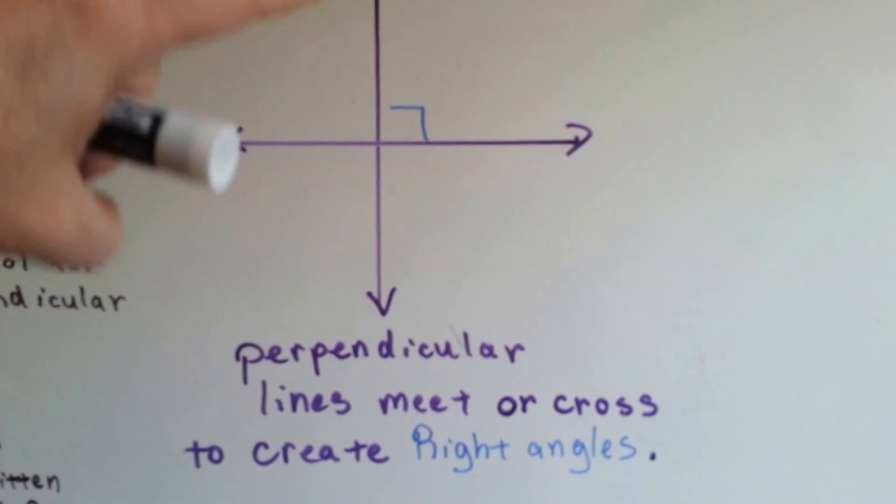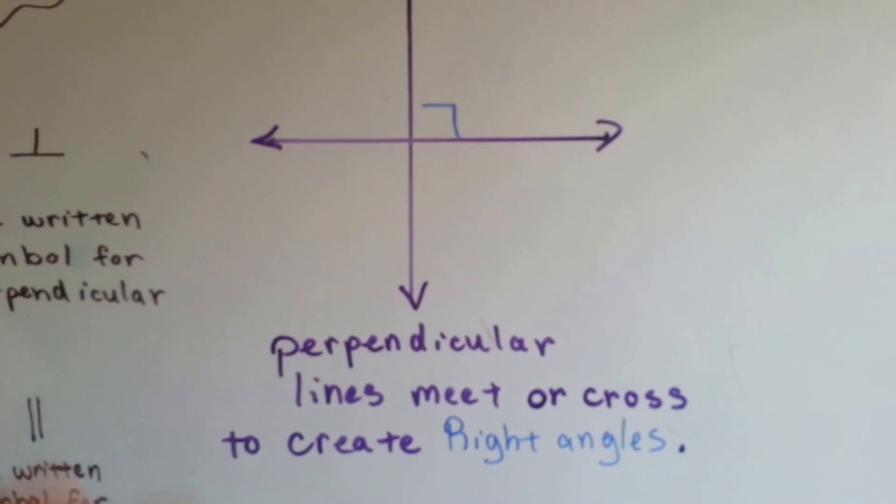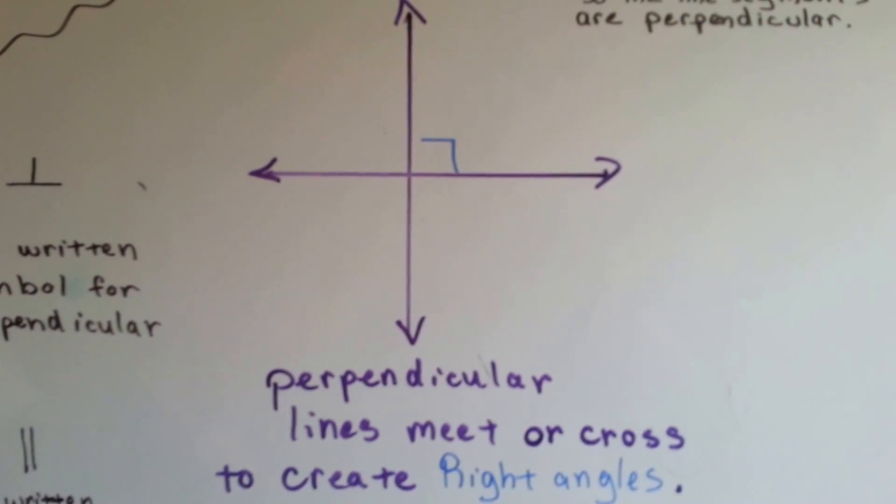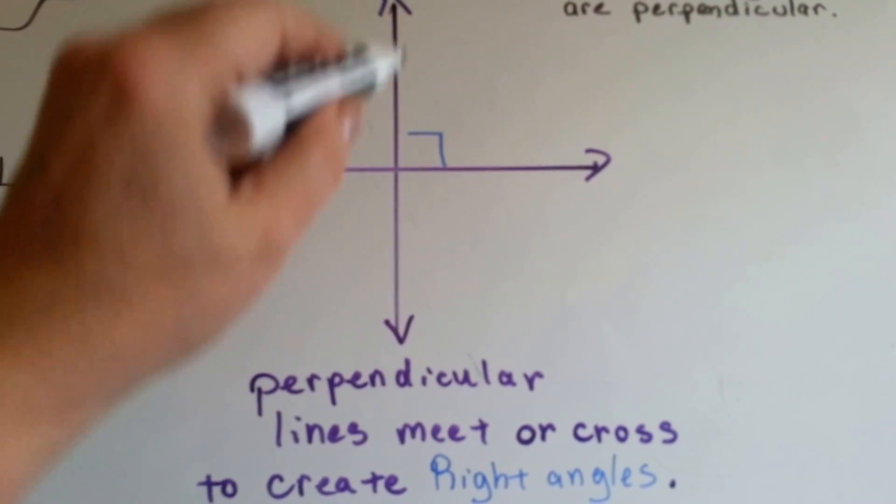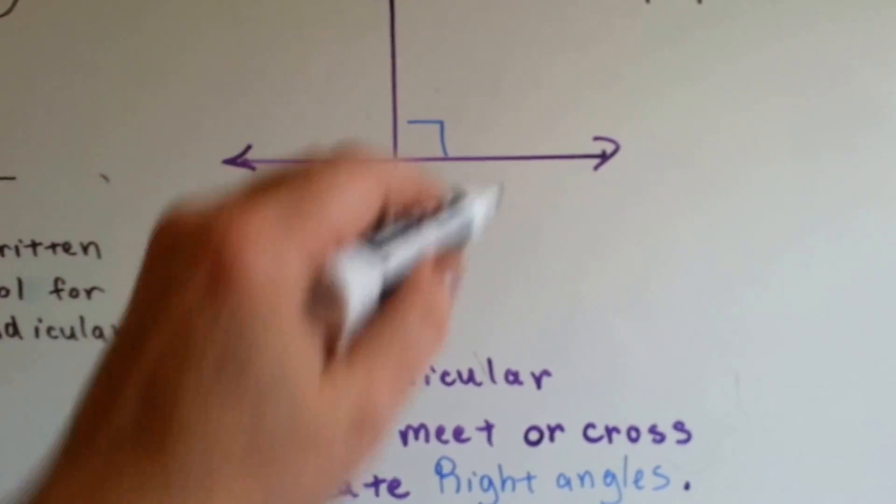Perpendicular is when lines meet or cross and create right angles. We discussed right angles a couple videos ago. It's when the angle is like a corner of a sheet of paper.